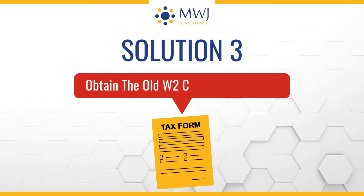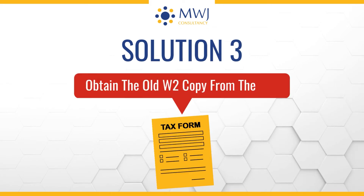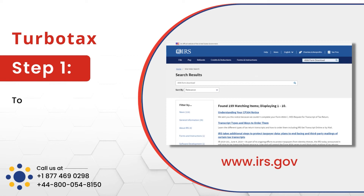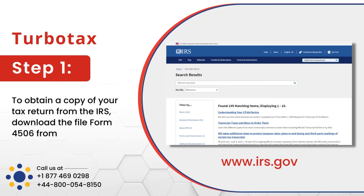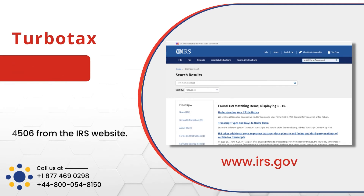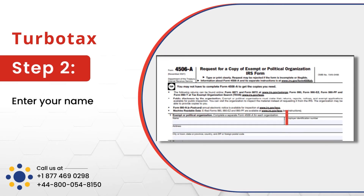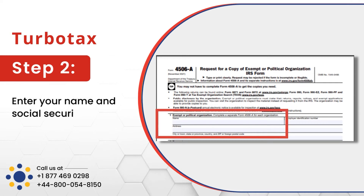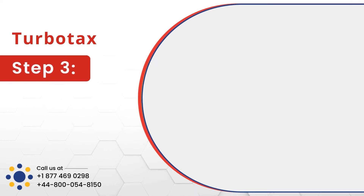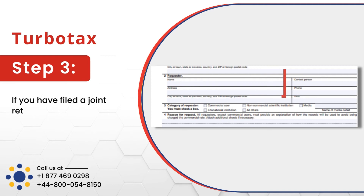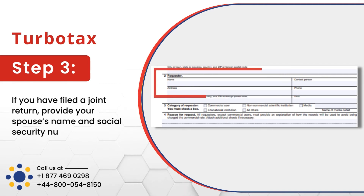Solution 3: Obtain the old W-2 copy from the IRS. To obtain a copy of your tax return from the IRS, download Form 4506 from the IRS website. Enter your name and social security number on line 1. If you have filed a joint return, provide your spouse's name and social security number on line 2.